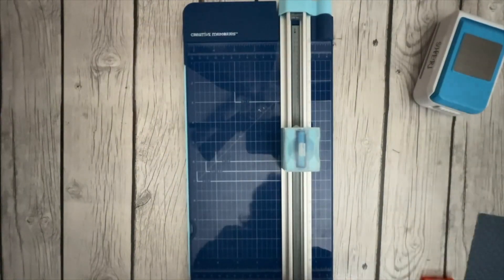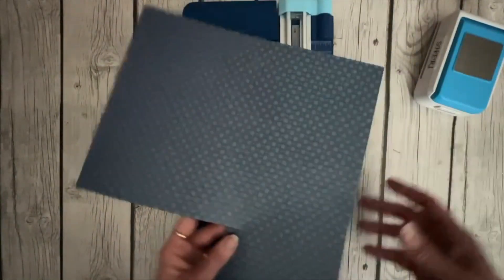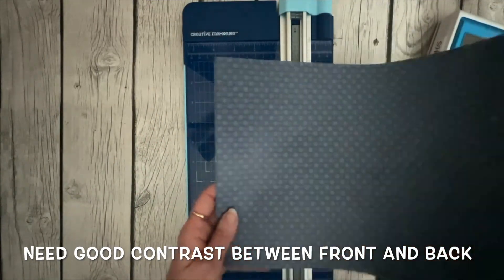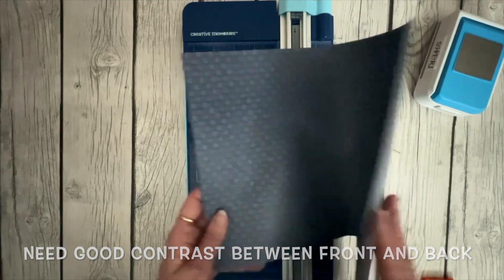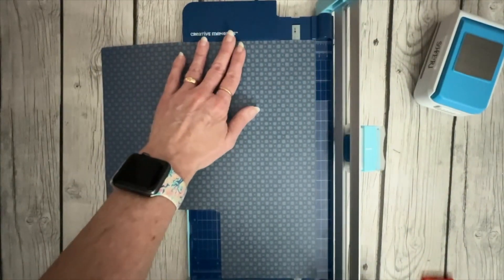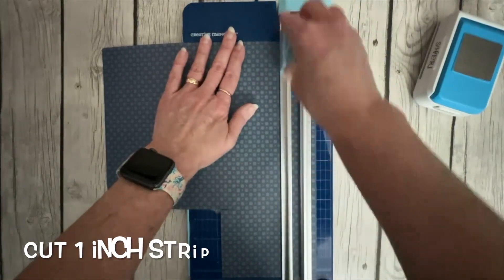So the first thing you need to look for is a piece of our designer print that has good contrast between the front and the back and you can see here we've got a lot of contrast. I'll put this in my cutter, slide it to the one inch mark and I'm just going to cut a little one inch strip off of this.